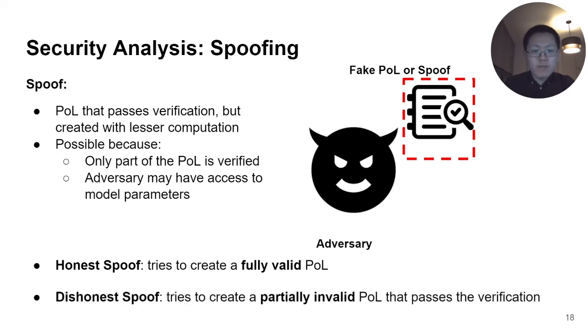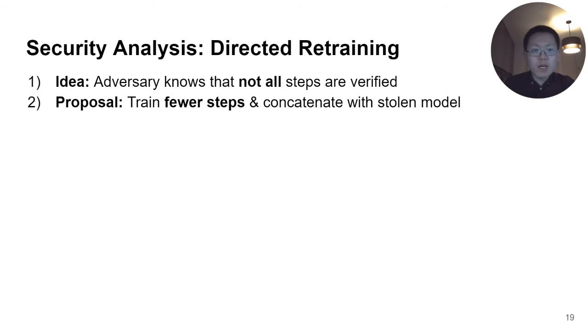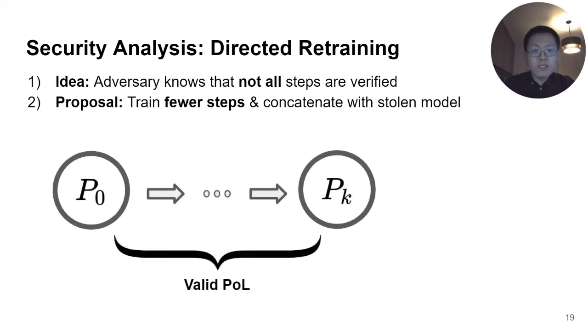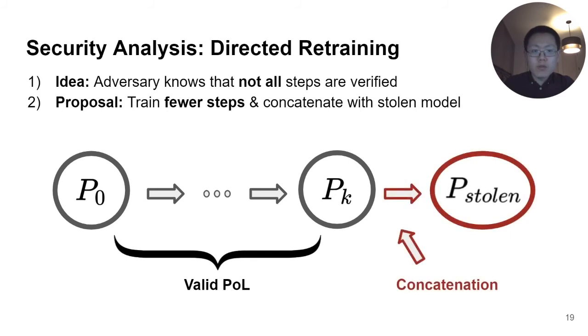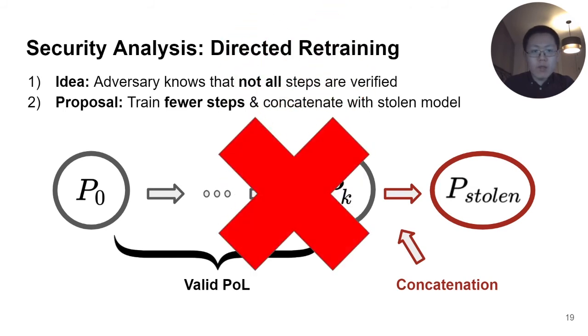To evade this cost, the adversary may want to be dishonest and create a partially invalid proof. This means the adversary tries to take advantage that not all steps are verified, and hide the invalid parts of the proof, hoping that they won't be noticed. Next, I'm going to give an example of a dishonest spoofing strategy. We assume the adversary is aware that not the entire proof is verified. To pass the initialization verification, the adversary needs to train from initialization. But this is only for a small number of steps, since the adversary wanted to save computational costs. This results in a valid proof. Then the adversary pins the stolen model to the end, and hope this single invalid step in the proof won't be noticed. This won't work, because we would verify the top-Q largest steps. And the concatenated step is likely to be the largest, since the stolen model does not have any connection to the model parameters in the valid proof.